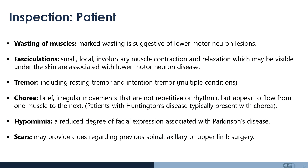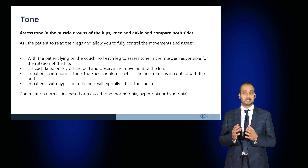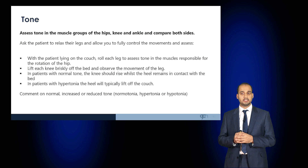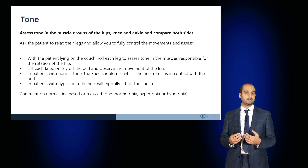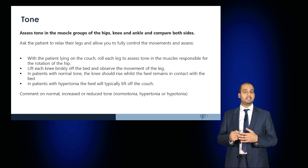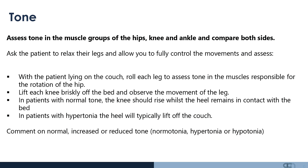Following thorough inspection, move on to examine the tone in the lower limbs. Tone should be examined in muscle groups of the hips, the knee, the ankle, with comparison on both sides. With the patient lying on the couch, roll each leg to assess tone in the muscles responsible for hip rotation. Lift the knee briskly off the bed and observe for movement of the leg. In patients with normal tone the knee should rise while the heel remains in contact with the bed. In patients with hypertonia the heel will typically lift off the couch. Comment on whether tone is normal, increased or reduced — normotonia, hypertonia or hypotonia.